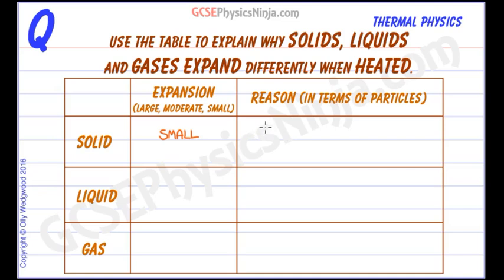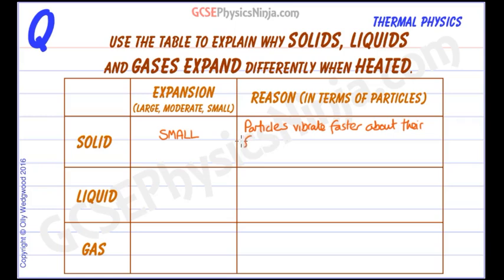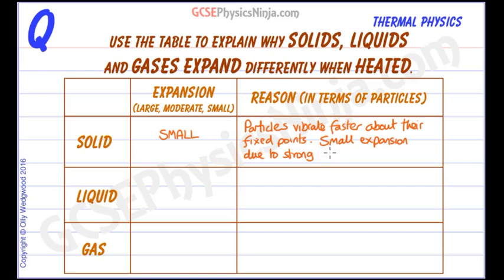They're vibrating much faster, but the bonds are so strong that they keep them close together. So we can say that particles — those might be atoms or molecules — vibrate faster about their fixed points. But there is only small expansion, due to strong solid bonds.